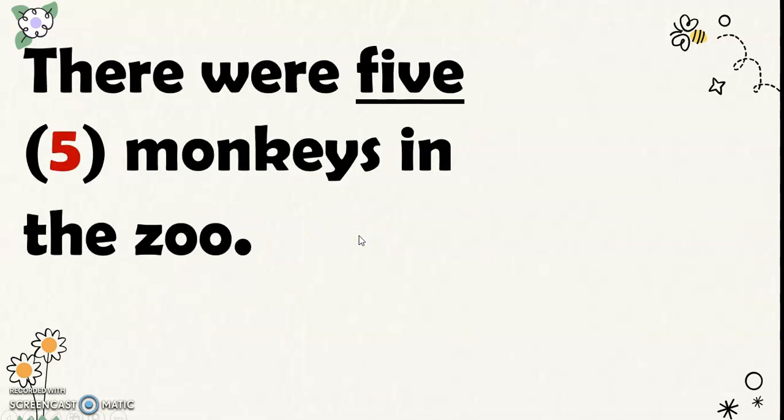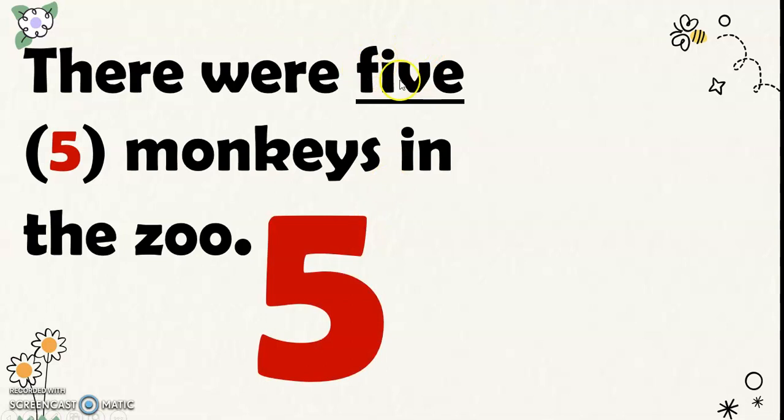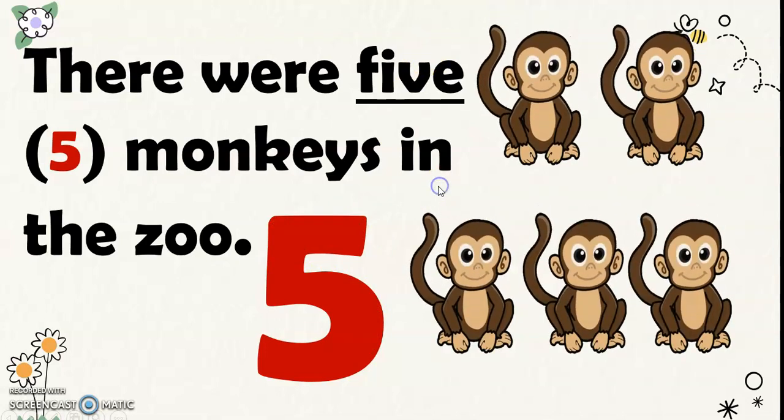Next, there were 5 monkeys in the zoo. This is the number word for 5, and this is the number symbol for 5. So, 5 monkeys in the zoo.